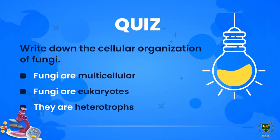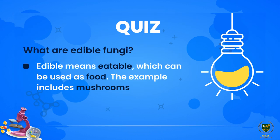Now I will take a short quiz from you to see how much you have understood Kingdom Fungi. Our first question: write down — what is the cellular organization of fungi? Students, we know that fungi are eukaryotic and multicellular. This means they are eukaryotes — made of eukaryotic cells — and we know that these are cells with a well-defined nucleus and membrane-bounded organelles. Fungi are multicellular, meaning they are made of many cells.